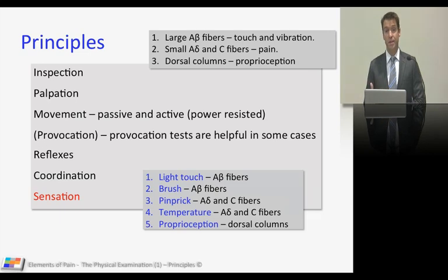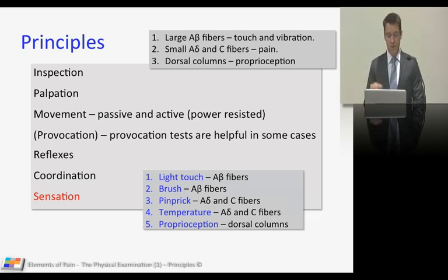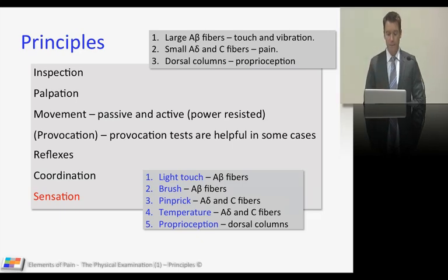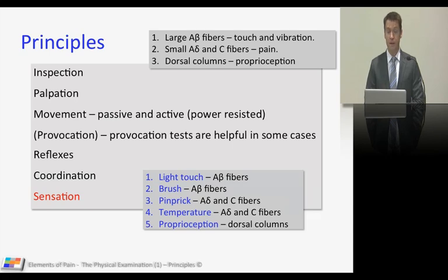For sensation, you're looking to assess your A-beta fibres — your large touch fibres — as well as the A-delta and C small fibres for pain, and you might also check the dorsal columns. For light touch and A-beta fibres, you're assessing static mechanical allodynia: take a wisp of cotton wool and dab it onto your patient. Then using your brush, you're looking for dynamic tactile allodynia — brush it up and down to see what happens. You're looking for hypo- and hyperesthetic phenomena.